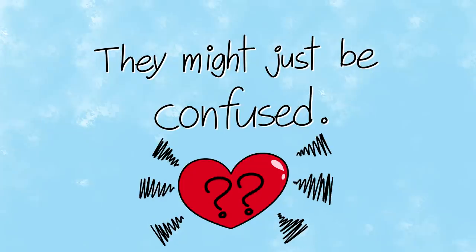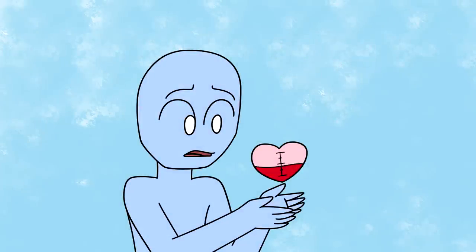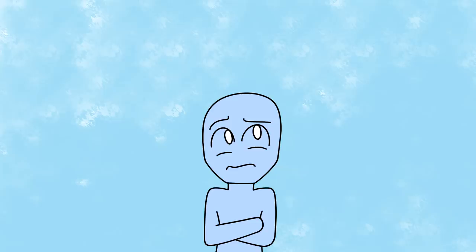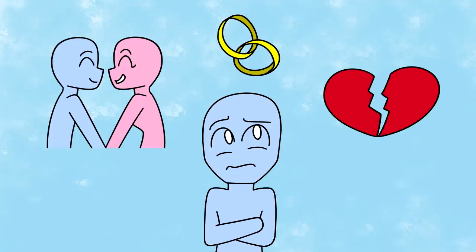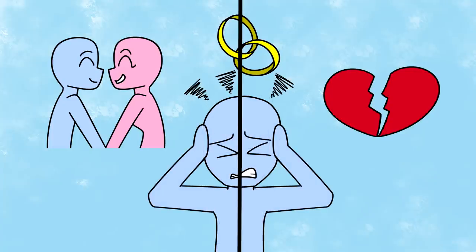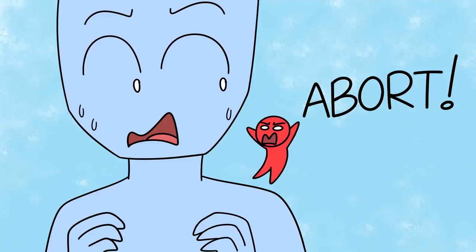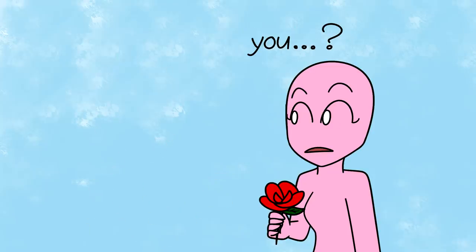They might just be confused. At the end of the day, people might be leading you on without fully realizing what they're doing. Not everyone knows what they want from a relationship right from the beginning, and they might be torn between two worlds. On one hand, they might want a serious relationship with you, but there might also be an inner voice warning them against it. They might just be afraid of getting hurt.